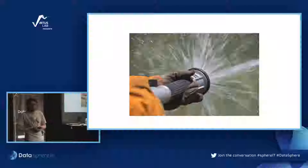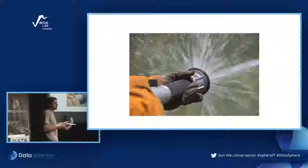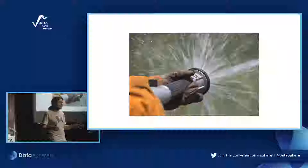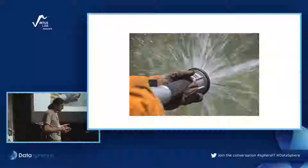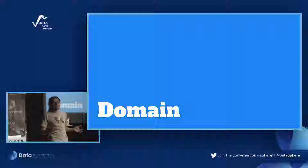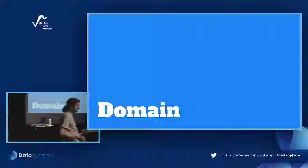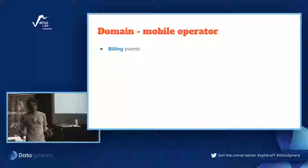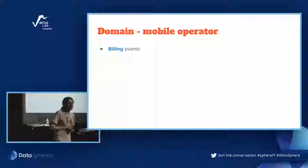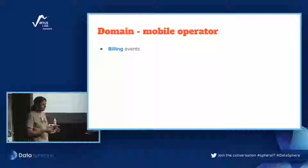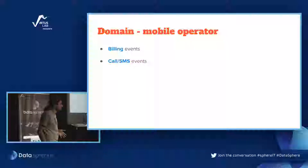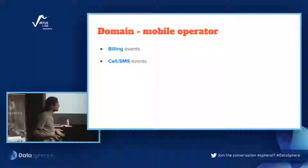At Talk we're mostly working for mobile operators in Poland — almost all of them, at least the big four, but also many smaller MVNOs. So our clients are mobile operators. What kind of data does a mobile operator typically have? Well, the first thing are billing events: if you make a call, send an SMS, or use the internet, they almost always charge you. Now we have better tariffs with unlimited calls, but still it's at least a few thousand events per second.